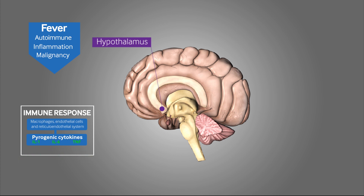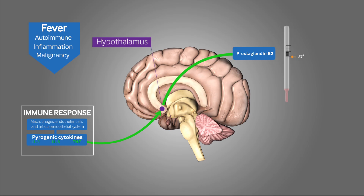During a febrile period, these cytokines induce the synthesis of prostaglandin E2 in the pre-optic area of the hypothalamus, which is responsible for increasing the core body temperature.